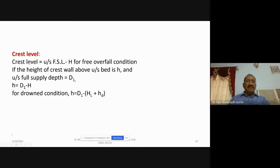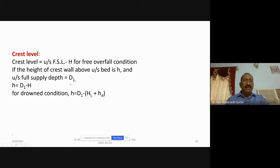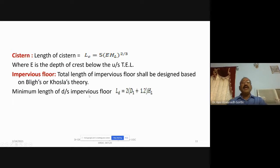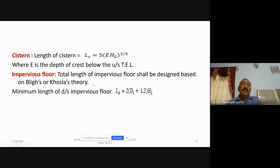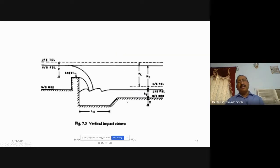If the height of the crest wall above the upstream bed is H, then the upstream full supply depth is D1 and small h = D1 − H. For the drowned condition, H = D1 − H + H_D, because for the submerged condition you also need to account for the loss. The cistern length will be 5 · H_L^(2/3), and the total length of the impervious floor is taken based on Bligh's or Khosla's theory, with a minimum length of 2·D1 + 1.2·H_L.